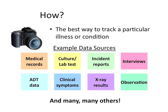Finally, how might you best track a particular illness or condition? Some examples of data sources that can be useful for surveillance include medical records, culture or lab tests, incident reports, interviews, ADT data, clinical symptoms, x-ray results, and observations, as well as many, many others.